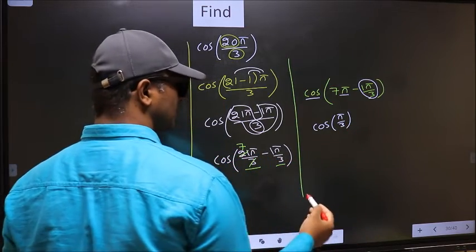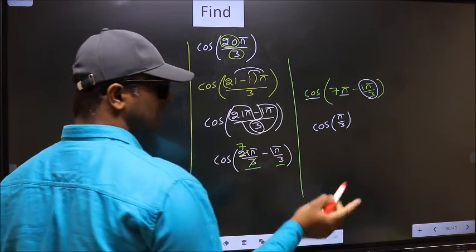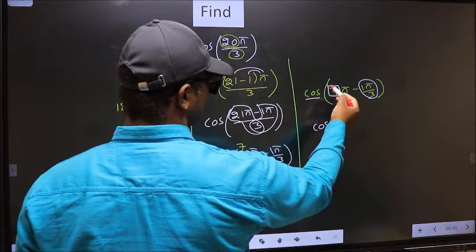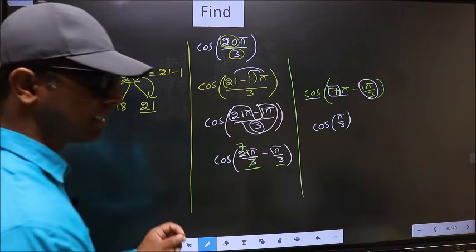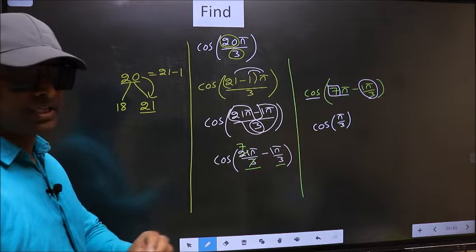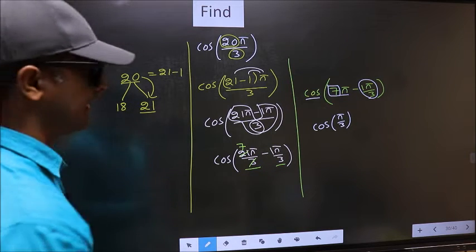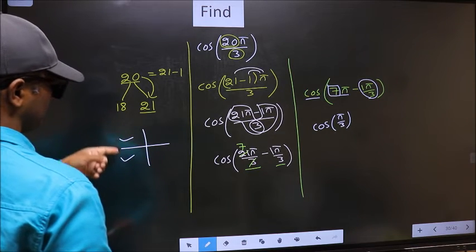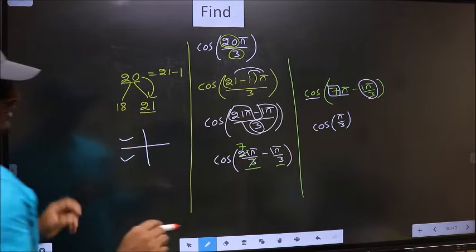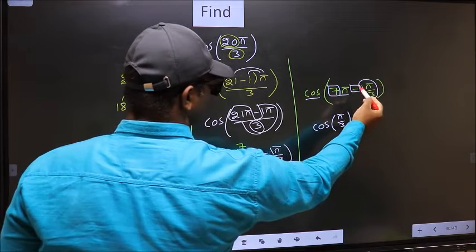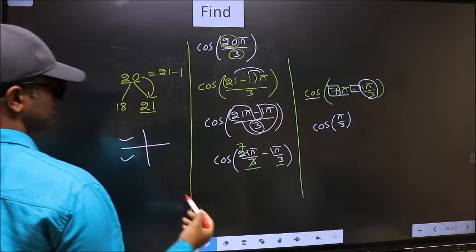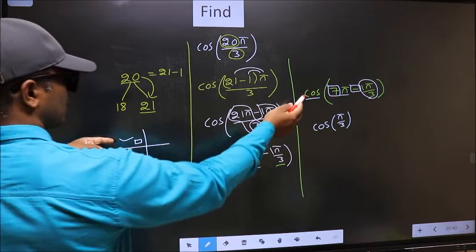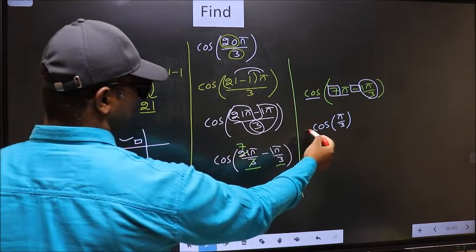Now the question arises will we get here plus or minus. To answer that we should look at the number before π which is 7. And 7 is odd. And all the odd multiples of π, they lie either in the second or in the third quadrant. So now to check which quadrant does it lie, we should look at this symbol. Here we have negative. That means angle lie in the second quadrant. And in the second quadrant cos is negative. So we should put negative.